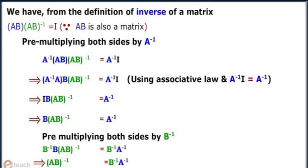Now on combining A with A inverse, we get A inverse into A into B into AB inverse is equal to A inverse I. Using associative law, A inverse I is equal to A inverse. This implies I into B is equal to AB whole inverse, which equals A inverse.